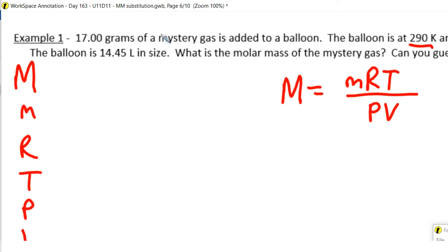then I put all the variables down the left-hand side and as I'm reading the question I'll just label what I know and what I don't know. So they got 17 grams of a mystery gas. So I'm trying to figure out what the molar mass is in my mystery gas to help me try to identify it. So 17 grams,